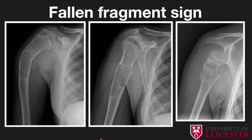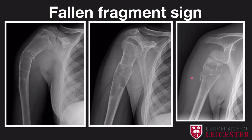Let's talk about the fallen fragment sign. This is an important sign because it indicates a fracture within some sort of pathology — what we call a pathological fracture. Here we have a patient with a simple bone cyst — a unicameral bone cyst — within the proximal humerus. There is a fracture on its superior portion. Specifically, you look for linear areas of high density within the cyst: small fragmented portions that have fallen within the cyst into its dependent portions. This is pathognomonic for a pathological fracture within a simple bone cyst, and is called the fallen fragment sign.